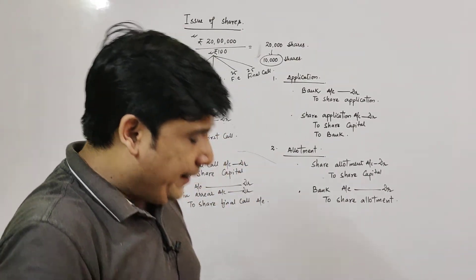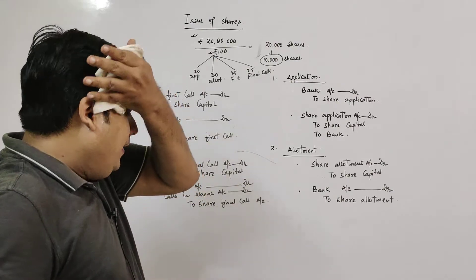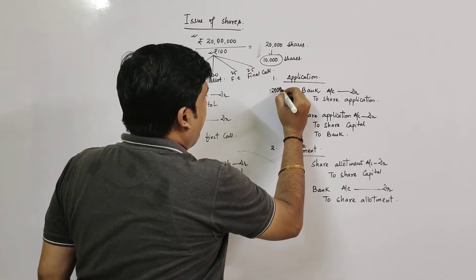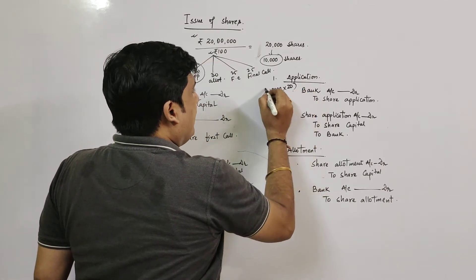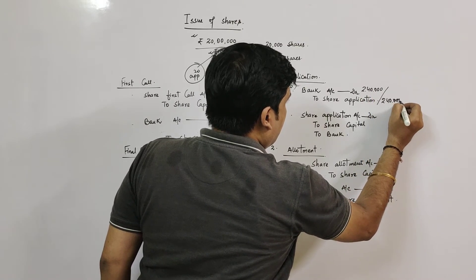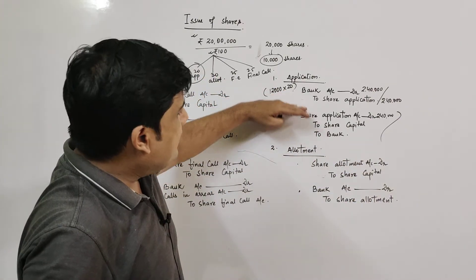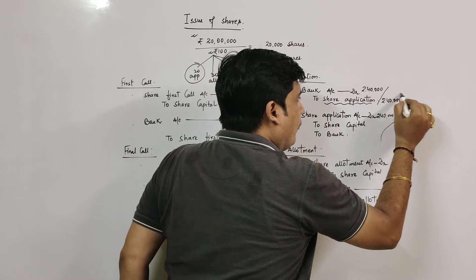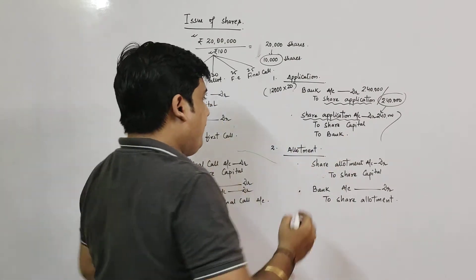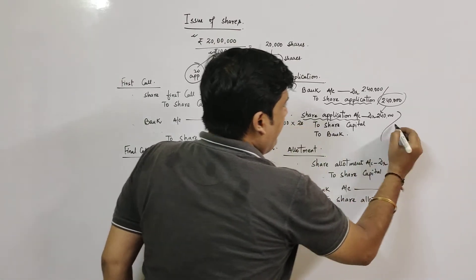Now let's fill in the amounts. For application: 12,000 applications came in, 12,000 × ₹20 = ₹2,40,000 comes to the company. We transfer the same ₹2,40,000 in the second application entry. For Share Capital, we always write the number of shares the company actually intended to issue — that is 10,000 shares × ₹20 = ₹2,00,000. The excess 2,000 shares' money which must be refunded is ₹40,000.